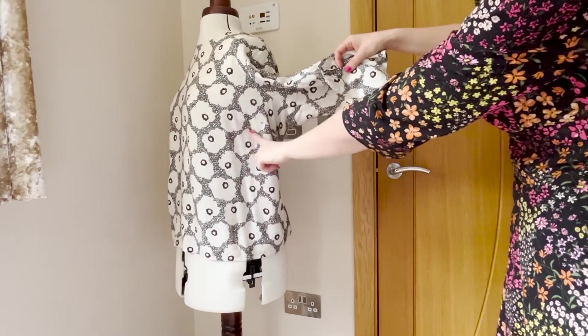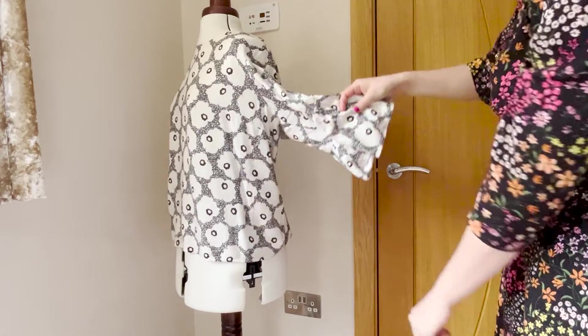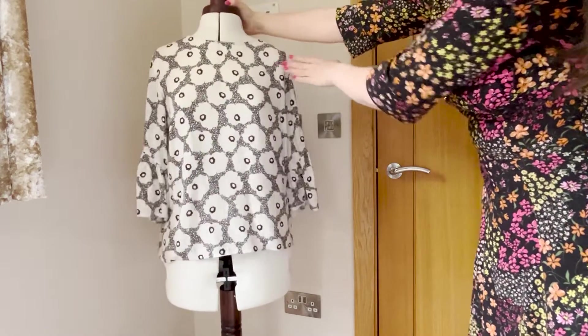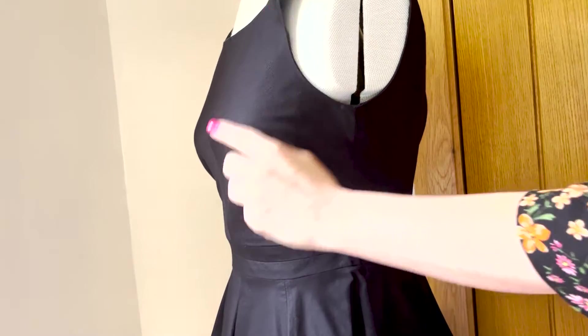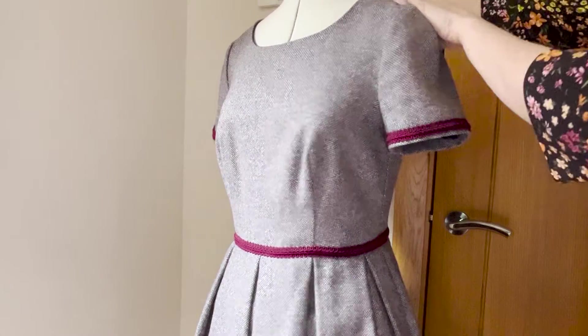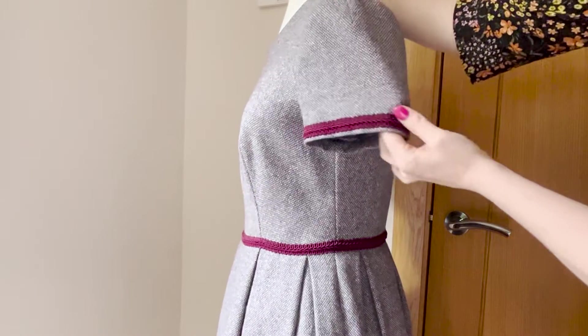You will find darts typically in the areas where you dip in and out: the breasts, the waist, hips and shoulders. Take a look in your wardrobe, examine your clothing and you'll find these hidden within garments that you weren't even aware of.